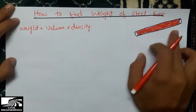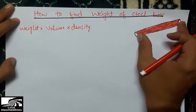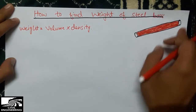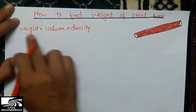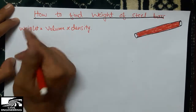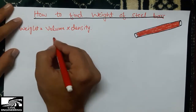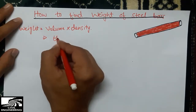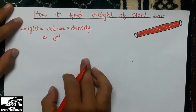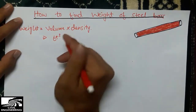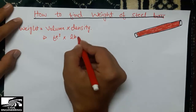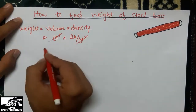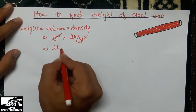For a steel bar, we find its volume by multiplying the cross-sectional area by its length, then multiply by the density of the material. For example, volume in cubic feet multiplied by density in pounds per cubic foot — the cubic feet cancel, leaving the weight in pounds.